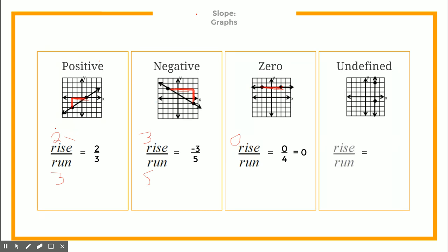Undefined slope is even easier — the minute you see a vertical line, you know automatically and immediately that this is an undefined slope, and you simply write 'undefined.' That's it.